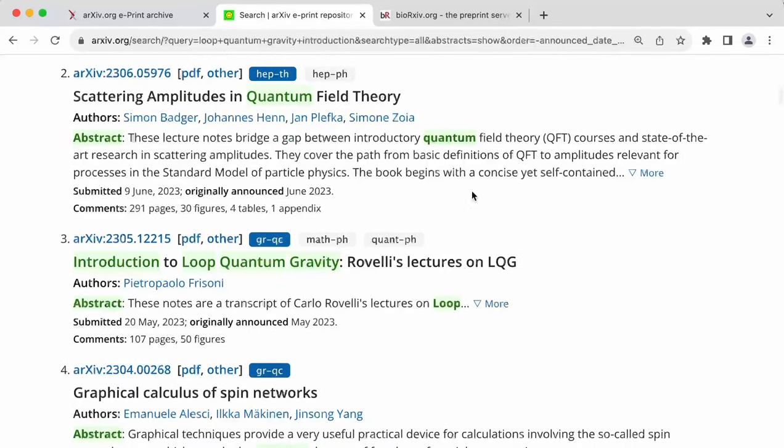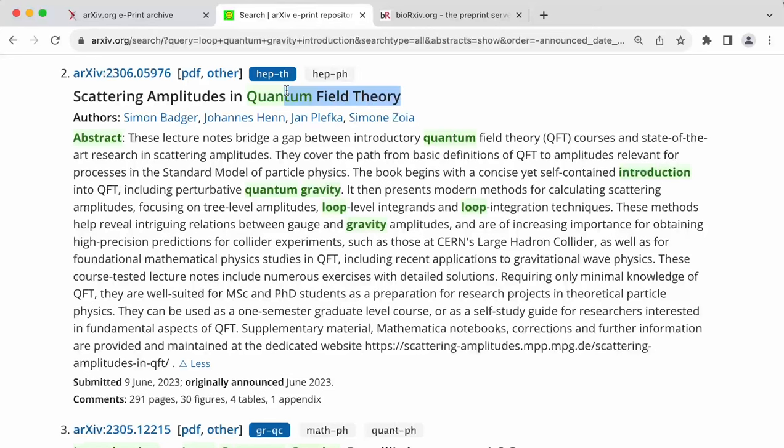But now, if you look at the second paper in this list, it's about scattering amplitudes in quantum field theory. And even though it has all three of those words, loop, quantum, and gravity, this paper is not about the field known as loop quantum gravity. It's about the loop here refers to Feynman diagram expansions at multiple loops, and quantum gravity just refers to the general overall field of quantum gravity.